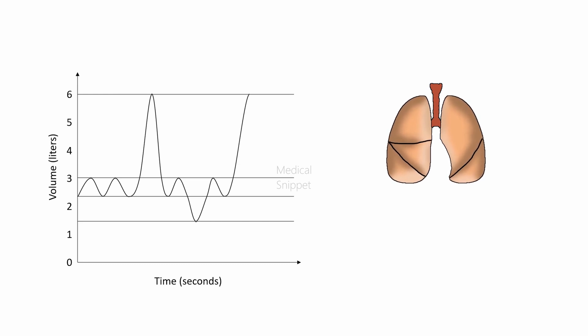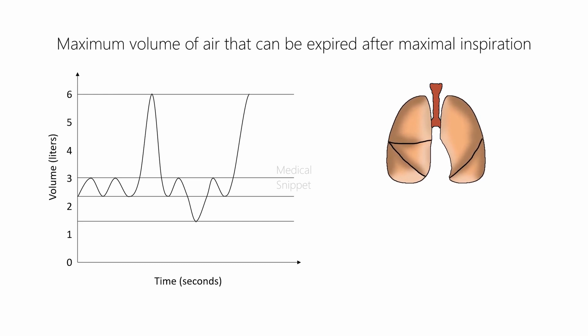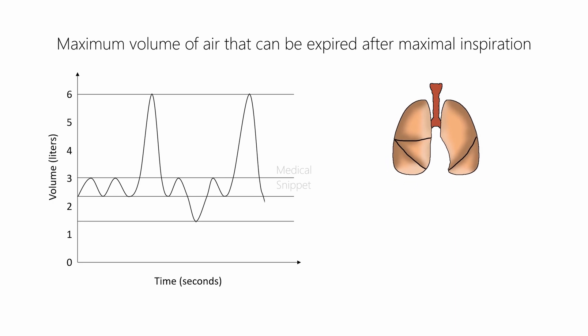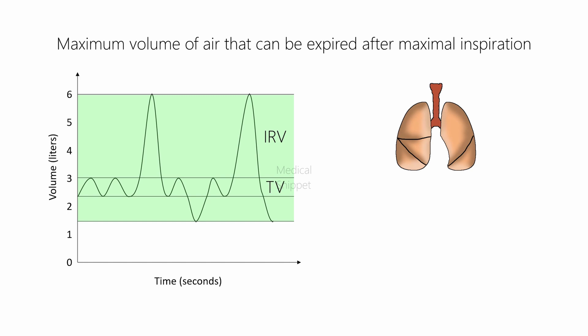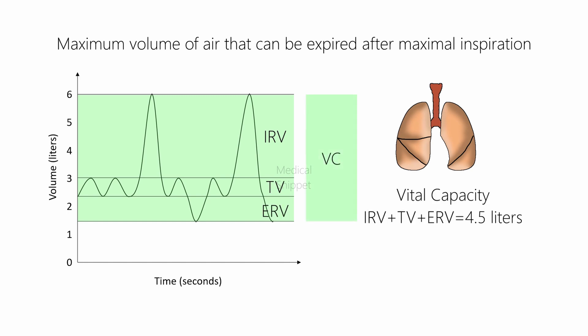The maximum volume of air that can be expired after maximal inspiration is called vital capacity. Vital capacity is the sum of inspiratory reserve volume, tidal volume, and expiratory reserve volume, which is approximately equal to 4.5 liters.